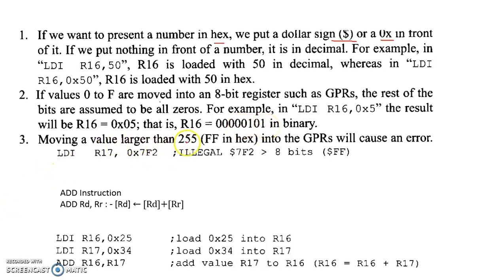Moving a value larger than 255 decimal or FF hexadecimal into the GPR will cause an error. FF hexadecimal equals 255 decimal, which is 16 raised to 2 minus 1. Loading values exceeding this is invalid.